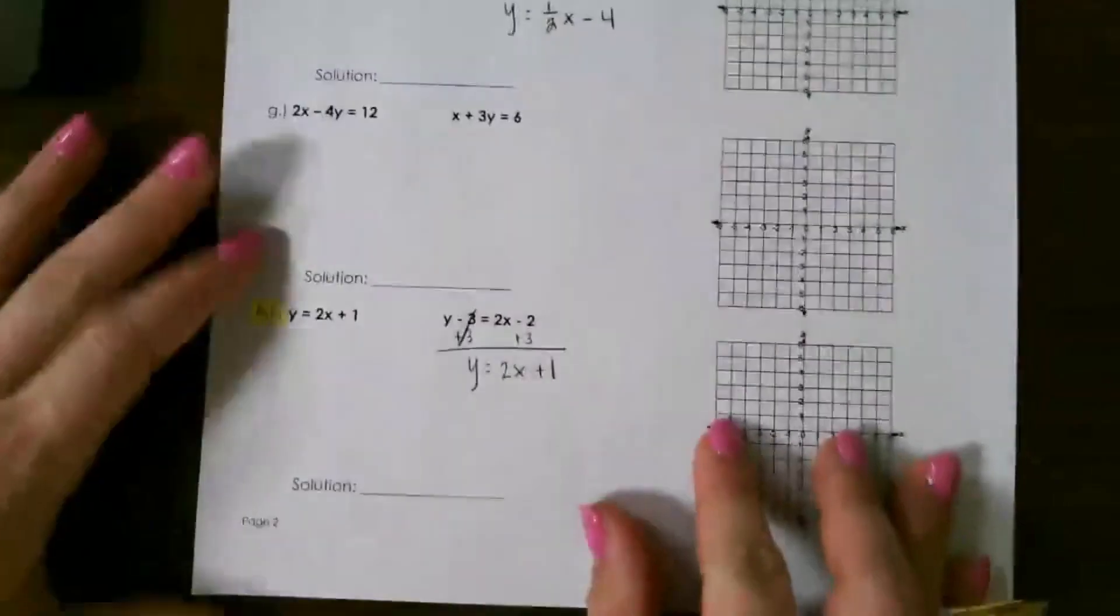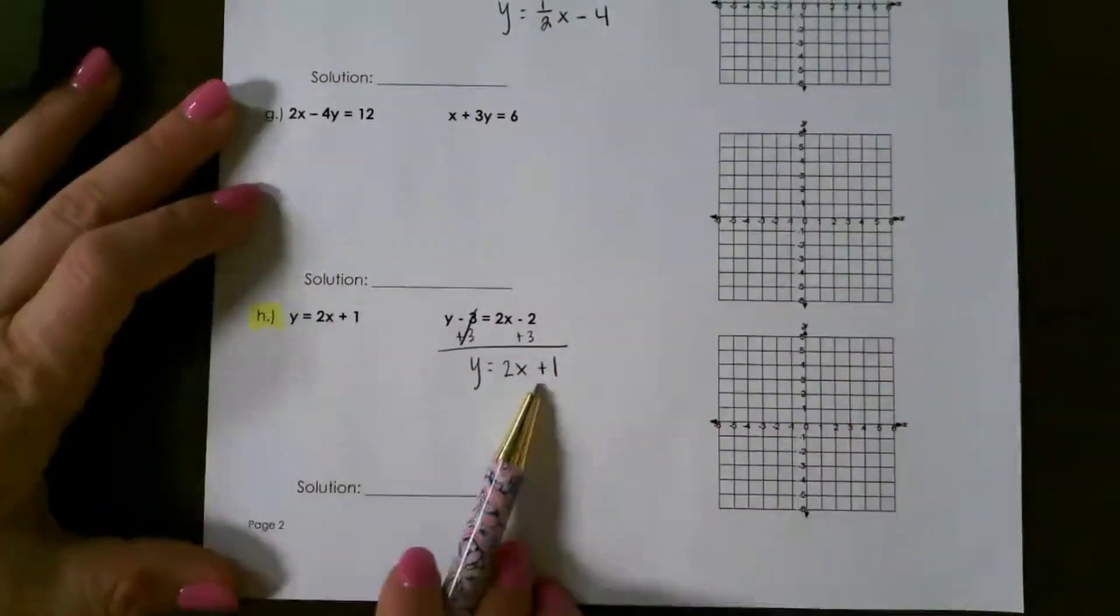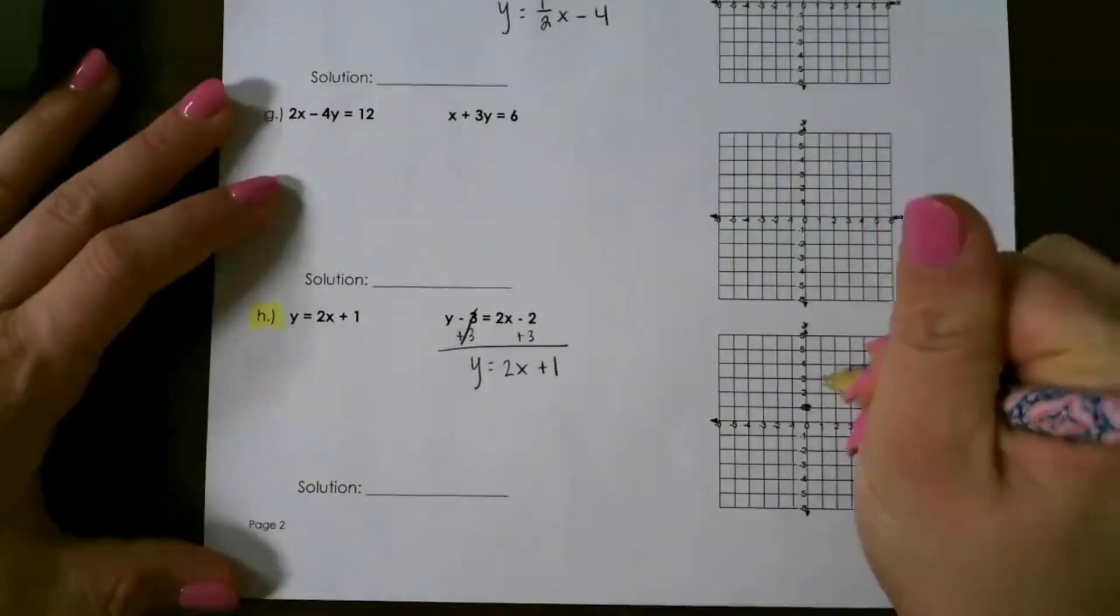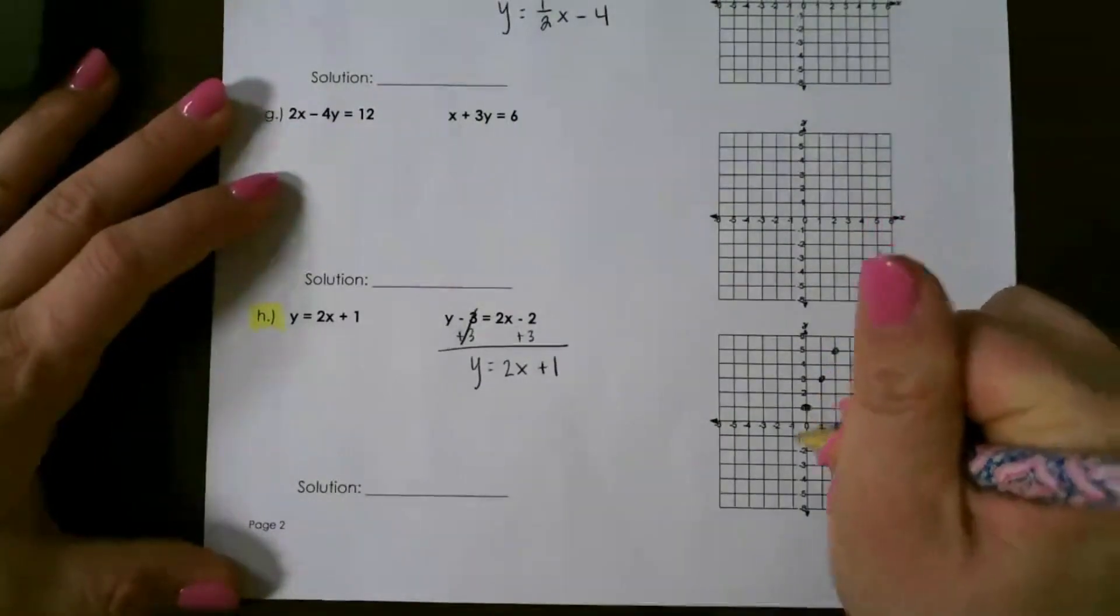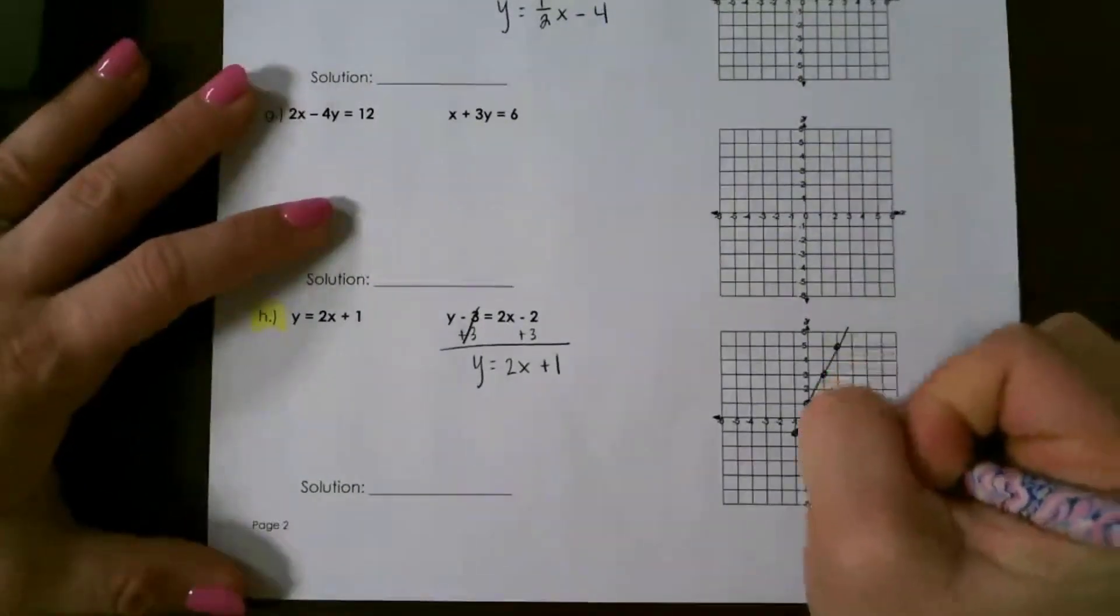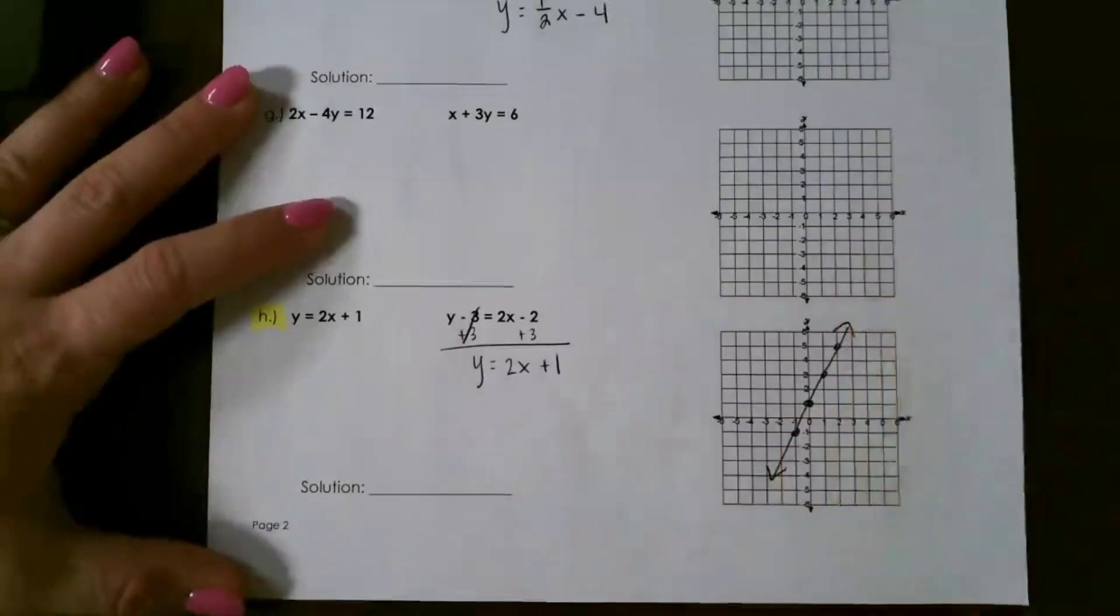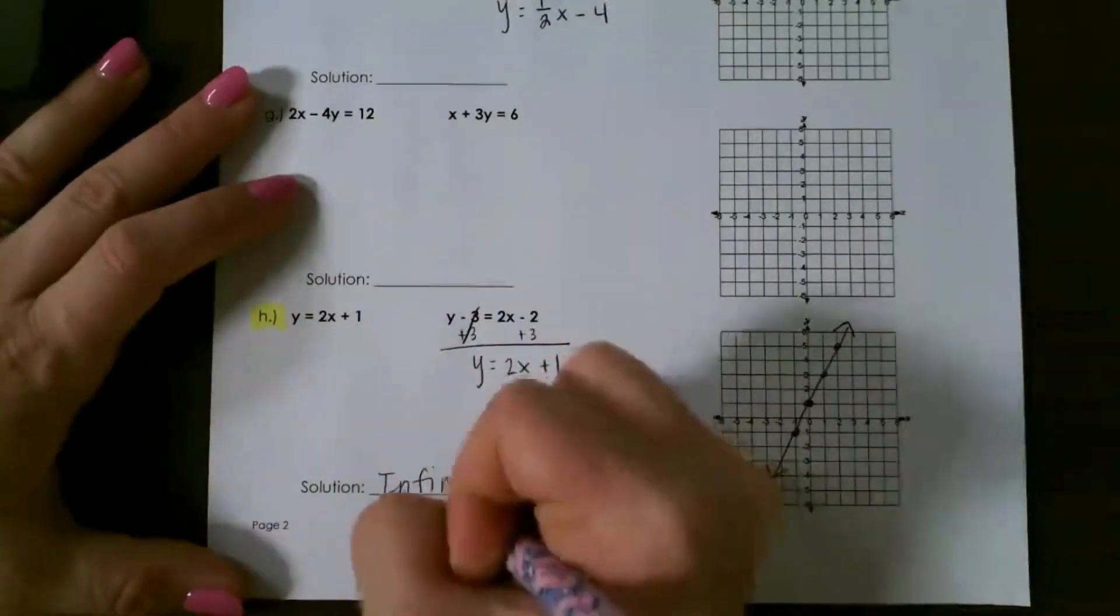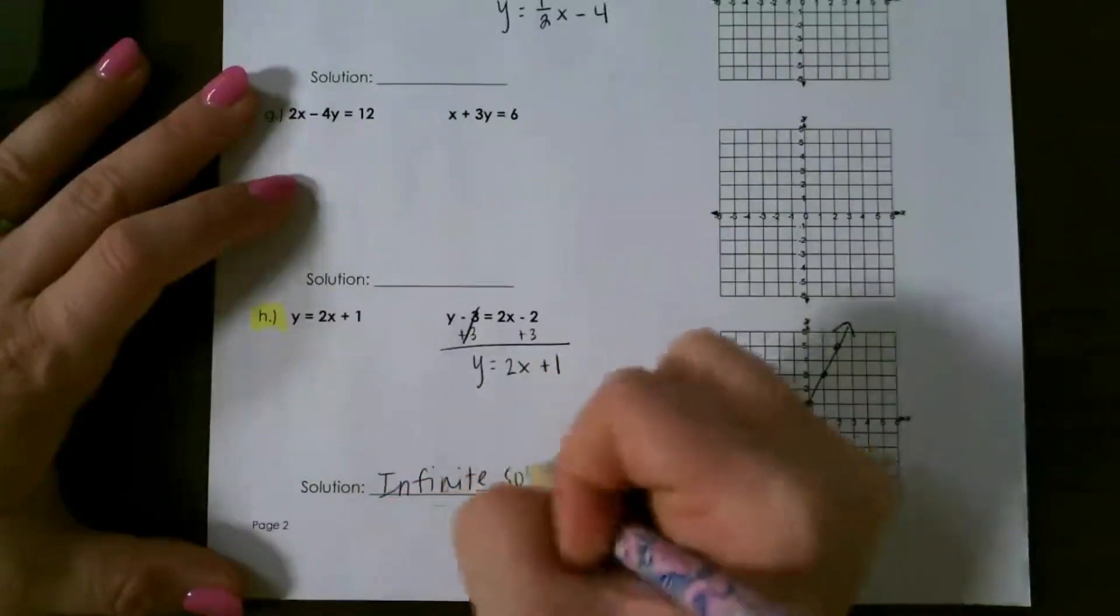For our last example down here at the bottom, you notice that both of the equations are the exact same. So when I go to graph these, they both have the same slope and the same y-intercept, so they would be simply on top of each other. So that means any ordered pair works. So that would be infinite solutions.